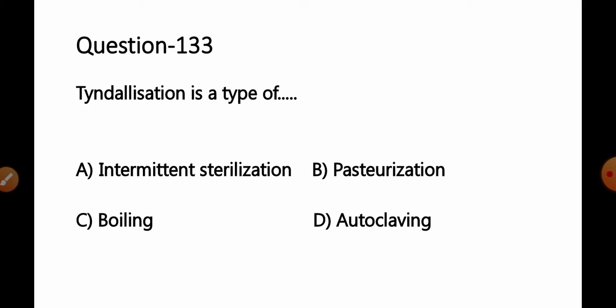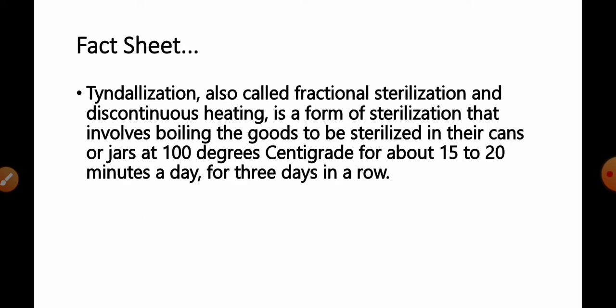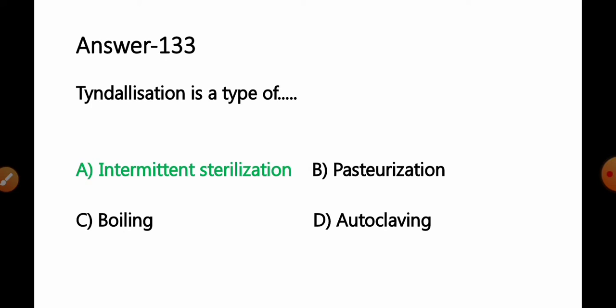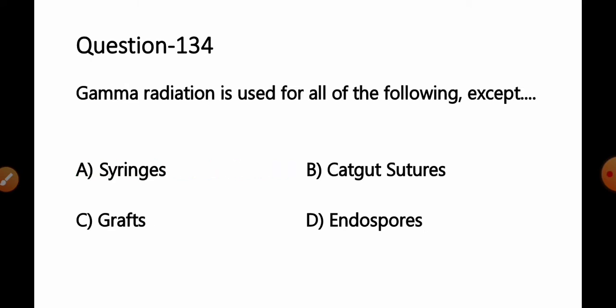Tindalization is a type of: option A intermittent sterilization, B pasteurization, C boiling, D autoclaving. Tindalization, also known as fractional sterilization or discontinuous heating, is a form of sterilization that involves boiling goods to be sterilized at 100°C for 15 to 20 minutes a day for three consecutive days. So tindalization is a type of intermittent sterilization — option A is the correct answer.